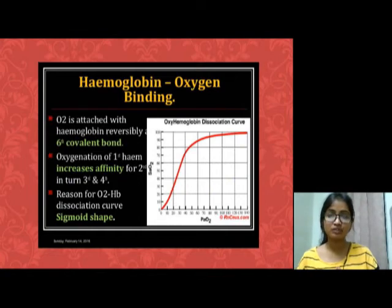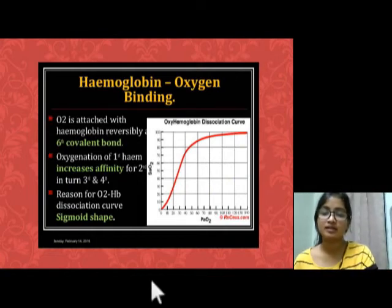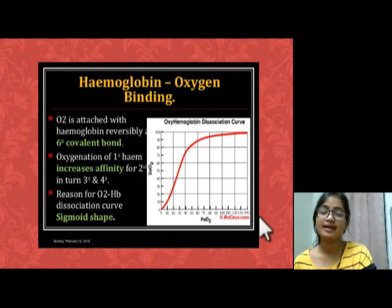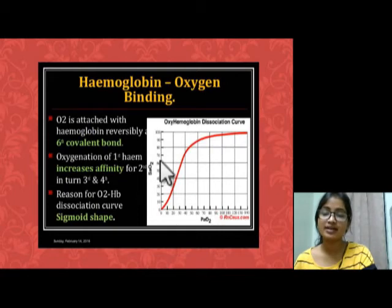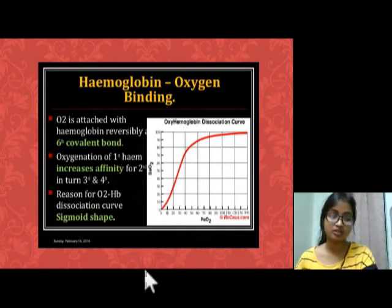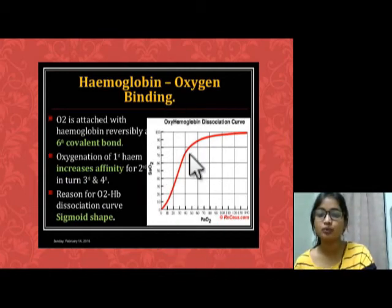Now we talk about oxygen binding, also called the oxygen-hemoglobin dissociation curve. In this graph, the X-axis denotes partial pressure of oxygen and the Y-axis denotes saturation of hemoglobin. This curve is called the sigmoid curve.